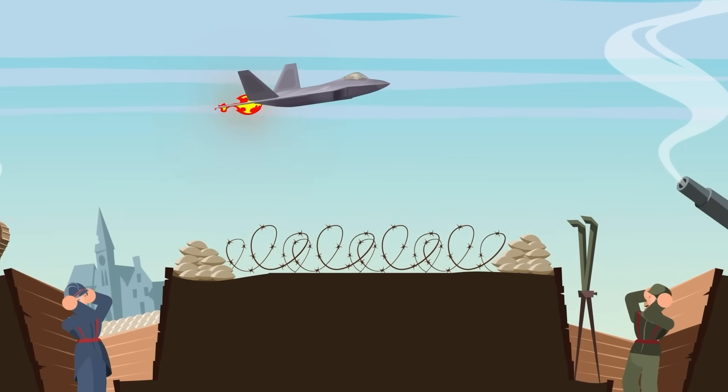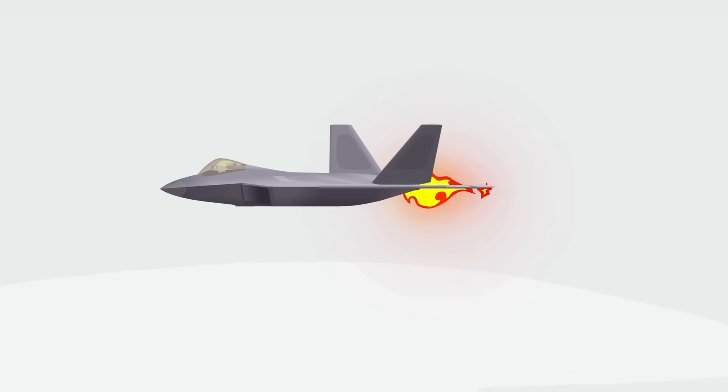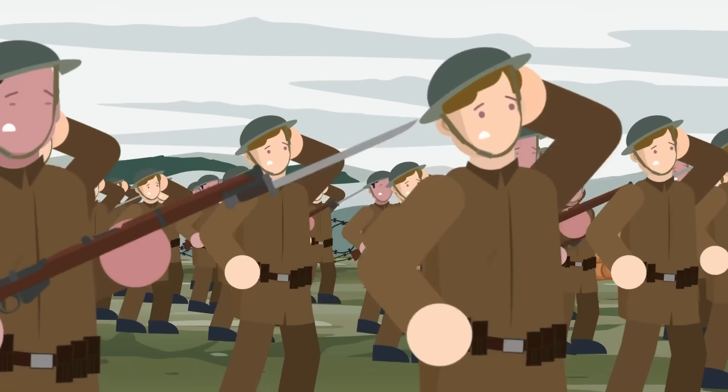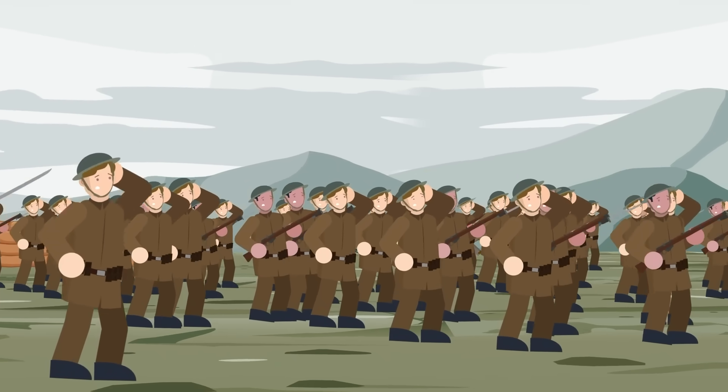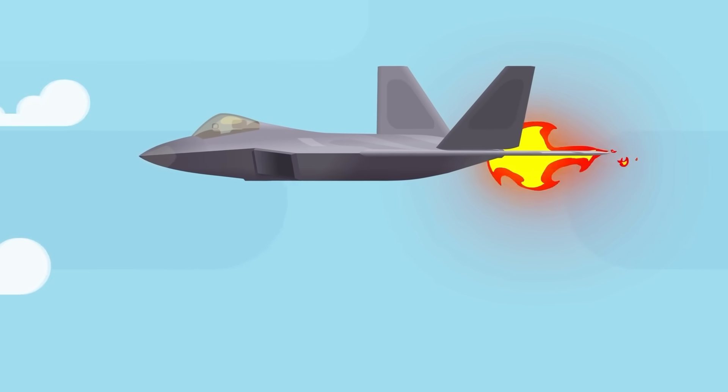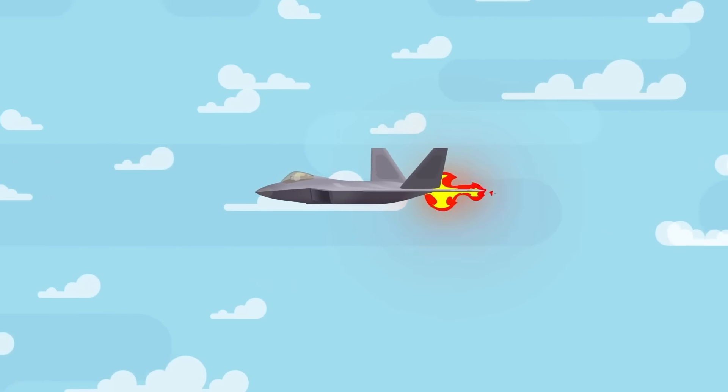With a thunderous roar, the F-22 would make its presence known above the trenches of war-torn Europe. Super-cruising without the need of afterburners, the F-22's supersonic crack would stun the thousands of troops assembled below who have quite literally never seen anything of the like. With silvery skin, a gold cockpit, and a delta-winged body, the F-22 is generations ahead of anything flying at the time.